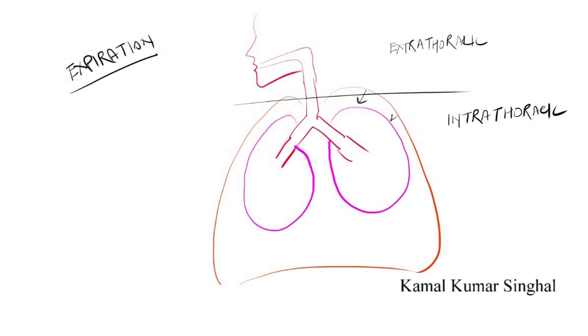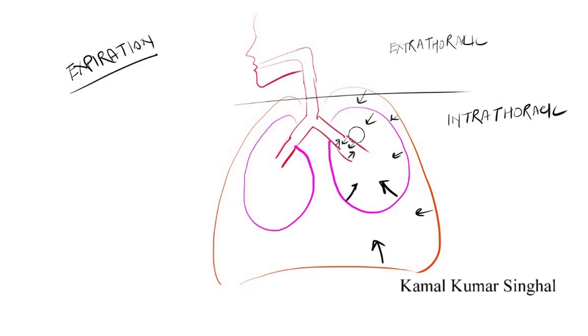In an intrathoracic airway obstruction during expiration, as the thoracic cage falls back and the lungs collapse, the airways inside the lung parenchyma also become narrower. So intrathoracic obstruction during expiration is more severe.